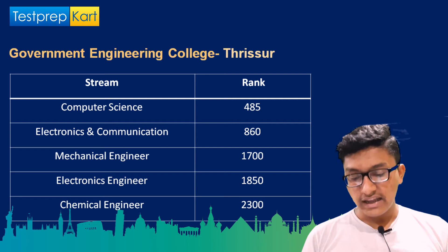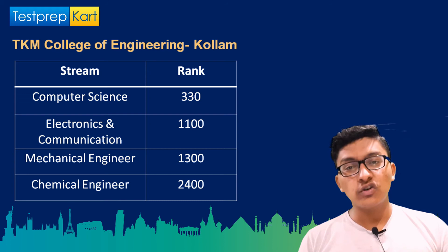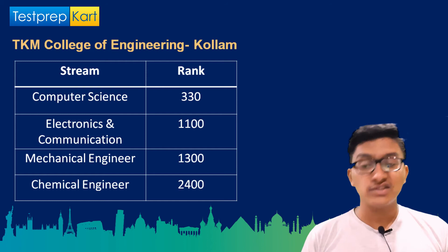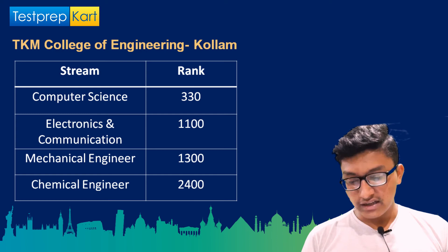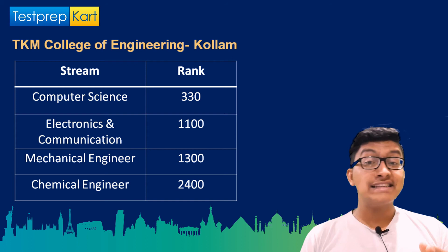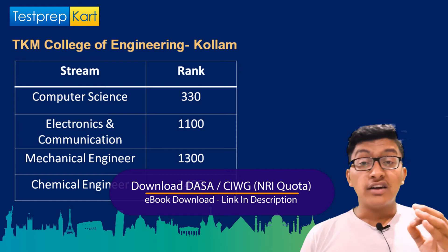For TKM College of Engineering Kollam: Computer Science Engineering requires a rank under 330, Electronics and Communication Engineering under 1100, Mechanical Engineering under 1300, Electrical Engineering under 1700, Civil Engineering under 2300, and Chemical Engineering under 2400. These are the recent cutoffs for the top three colleges under KEAM.